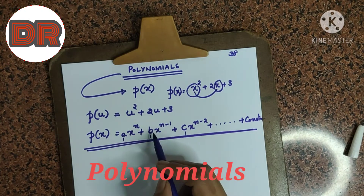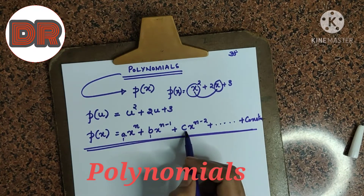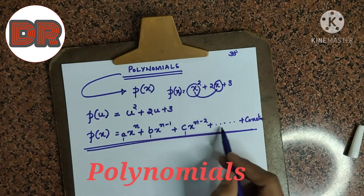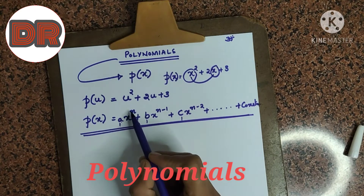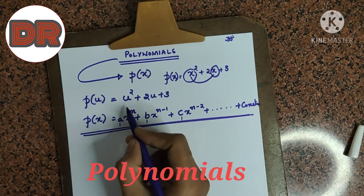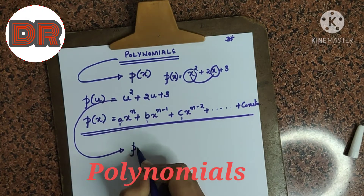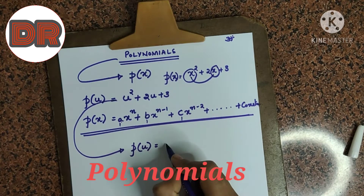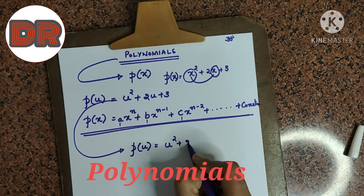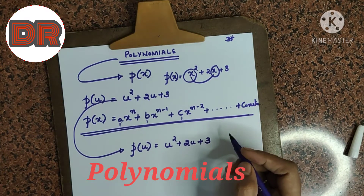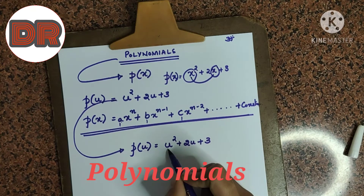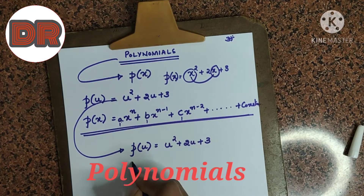All these are the coefficients of the variable powers. So, a is a coefficient which is a number, b is a coefficient, c is a coefficient — all these are coefficients. Now, the polynomial whose highest power... here the highest power is n. If I take the example where the variable is u and the polynomial is u square plus 2u plus 3, what is the highest power of variable u here? It is 2.